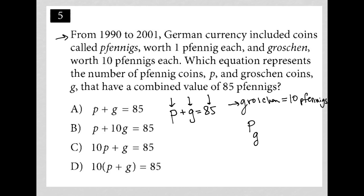So I need to be multiplying 10 times G to understand its value. So this would become then P, because that's just equal to 1, right? That's just worth 1, plus 10 times G, because every single G is worth 10 pfennigs, is going to equal my 85, right?